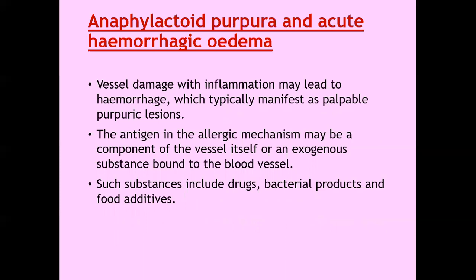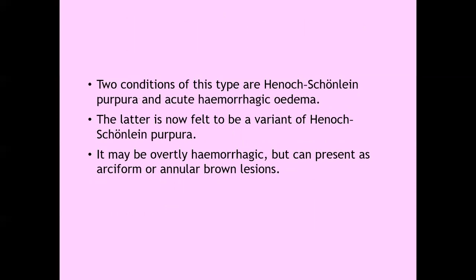Anaphylactoid purpura and acute hemorrhagic edema. Vessel damage with inflammation may lead to hemorrhage, which typically manifests as palpable purpura. The antigen in the allergic mechanism may be some component of the vessel wall itself or an exogenous substance bound to the blood vessel, such as drugs, bacterial products, and food additives. Two conditions of this type are Henoch-Schönlein purpura and acute hemorrhagic edema in the newborn. The latter is now felt to be a variant of Henoch-Schönlein purpura. It may be overtly hemorrhagic but can present as arciform or annular brown lesions.